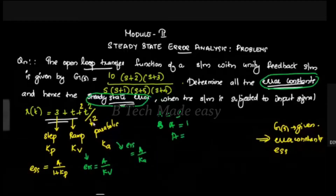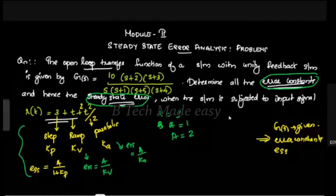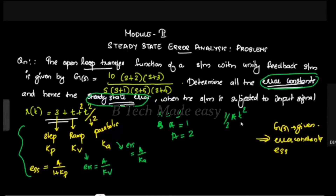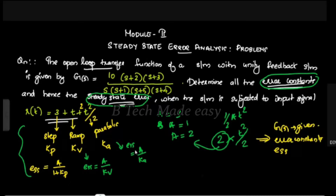If the input is half t-squared, then the coefficient is 2. In the parabolic case, it is called a value. The t-squared term gives a coefficient of 2. Next, we will find the corresponding Kp, Kv, and Ka values.